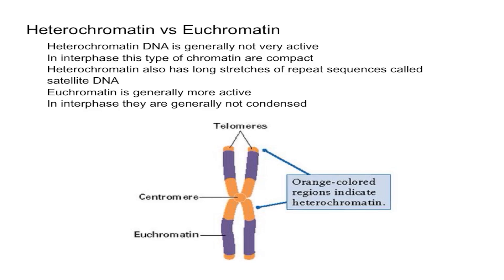The major point to take away is that euchromatin is very important and contains genes that are useful, while heterochromatin is not as important. Therefore, heterochromatin is condensed during interphase while euchromatin is not condensed during interphase.